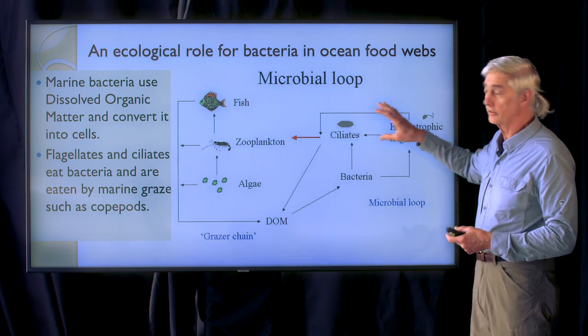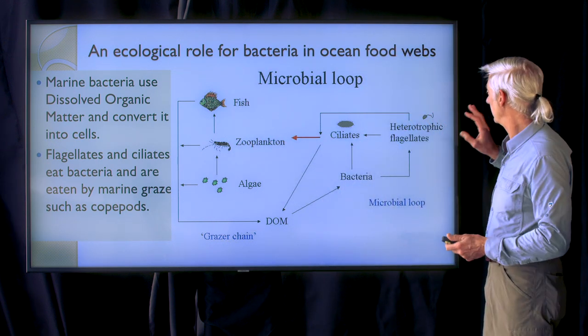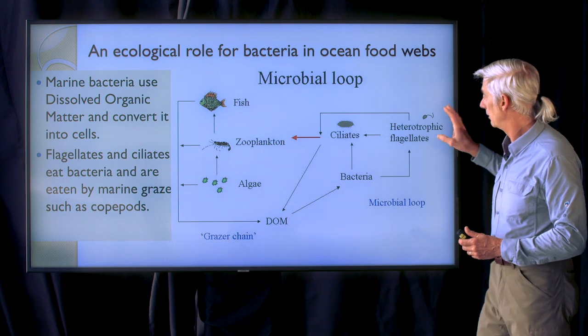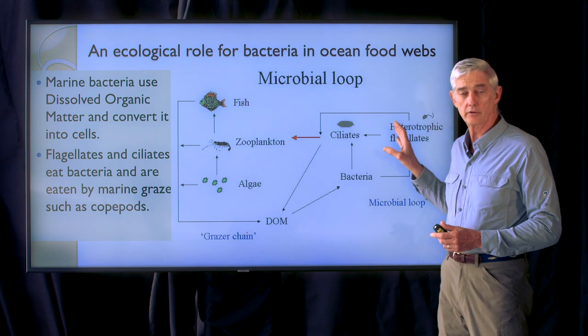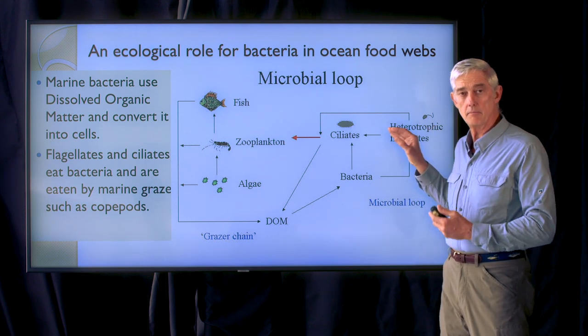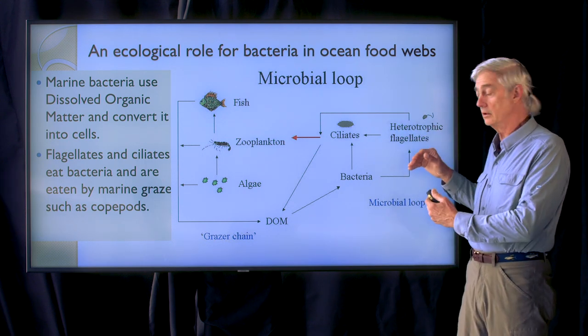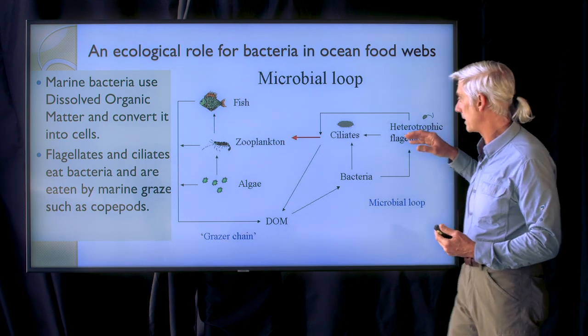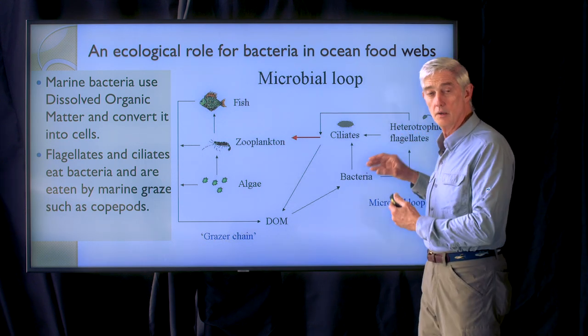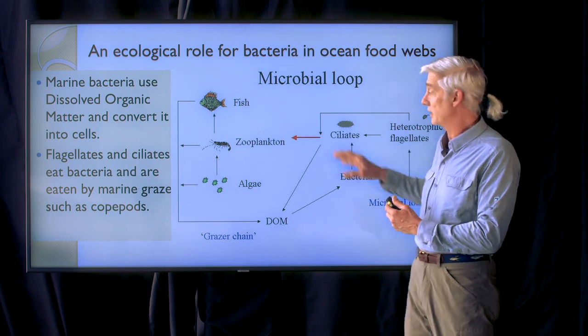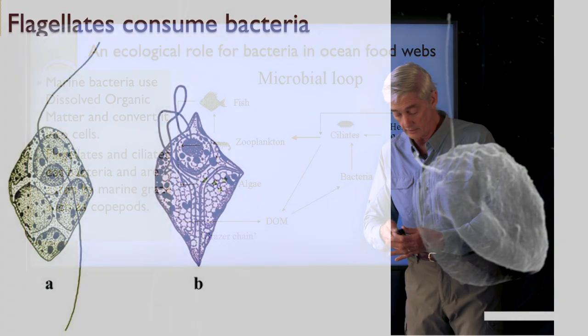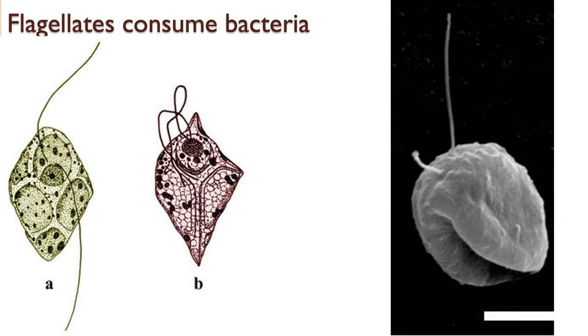And those are ciliates and flagellates that make up a critical link between the bacterial part of the food chain and this other part.